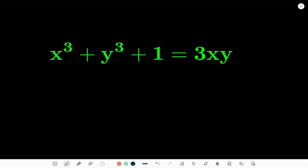So we have x³ + y³ + 1 = 3xy and we are supposed to find the positive integer values for x and y. So how to go about this problem? What do you first notice when you see this expression?